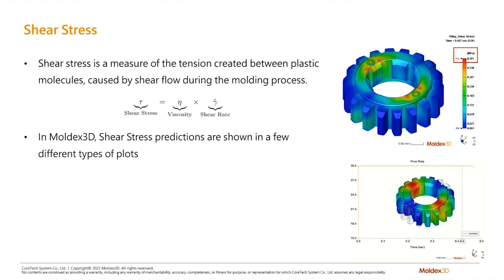So let's talk about shear stress. By definition, shear stress is a measure of the tension created between the plastic molecules. With tons of molecules being put through this process — heating up, melting, and all that — there's a lot of shearing that happens. Within Moldex3, we can actually capture this, though there are some things that require us to capture it accurately. Looking at the upper right corner as an example, this is showing the overall shear stress on the part at the end of fill.